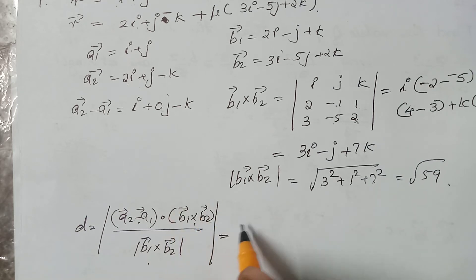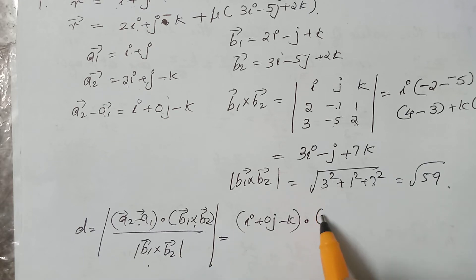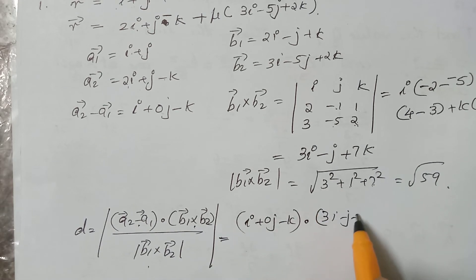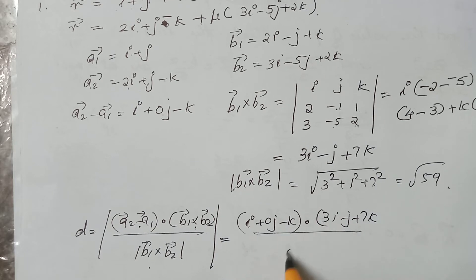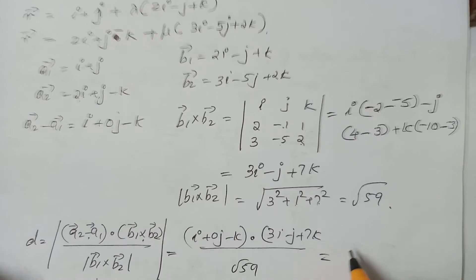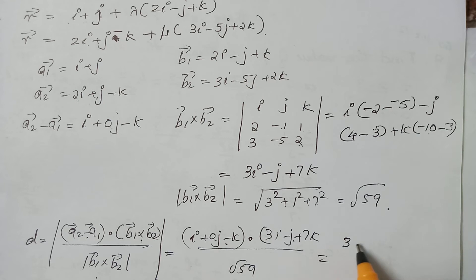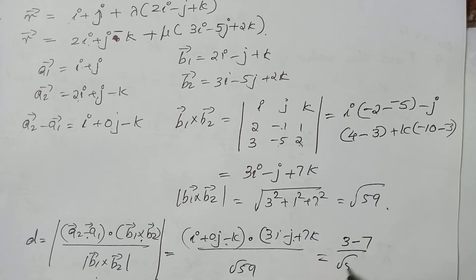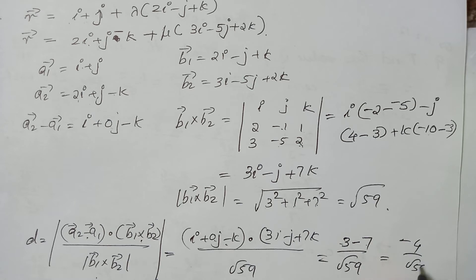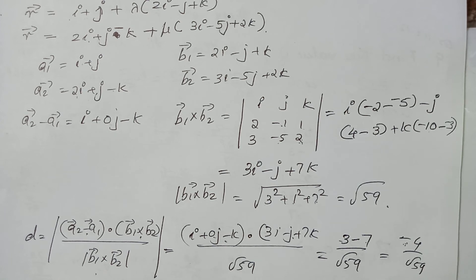We have A2 minus A1 = i plus 0j minus k, dot B1 cross B2 = 3i minus j plus 7k, divided by root 59. The dot product is: 1 into 3 is 3, 0 into minus 1 is 0, minus 1 into 7 is minus 7. That gives minus 4 by root 59. Taking the modulus, the shortest distance is 4 by root 59.